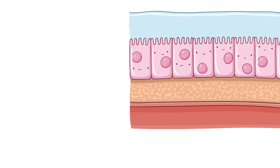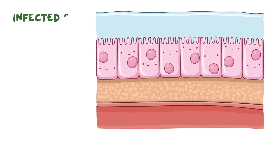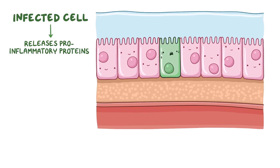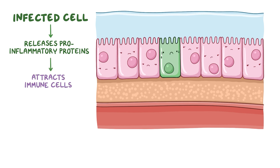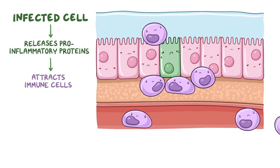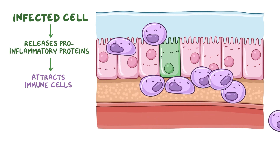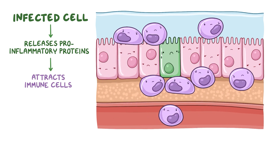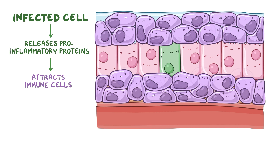When the host cell realizes it's been infected, it releases pro-inflammatory proteins, like cytokines and chemokines, to activate and attract immune cells to the site of infection. These recruit even more immune cells from blood vessels in the lamina propria — the layer just under the epithelium in the respiratory mucosa — and the end result is local inflammation.